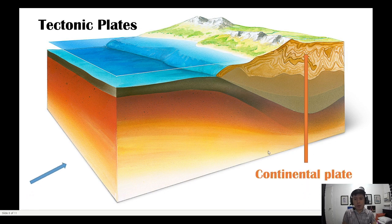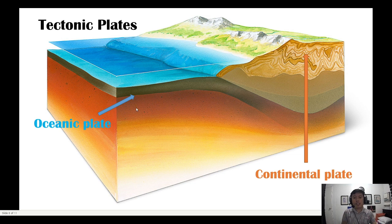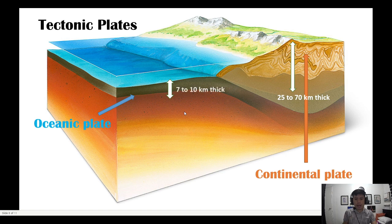Tectonic plates can be classified into either continental plate or oceanic plate. Continental plates are associated with exposed land masses — where you can see mountains, buildings, and other infrastructure. Oceanic plates, as the name suggests, lie on the ocean floor. In terms of thickness, continental plates are about 25 to 70 kilometers thick, while oceanic plates are only about 7 to 10 kilometers thick, so continental plates are clearly thicker.